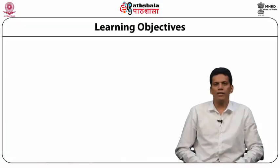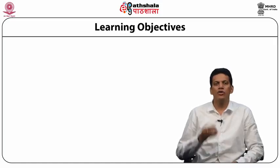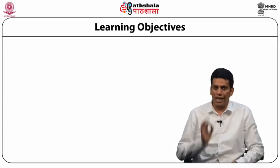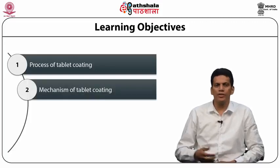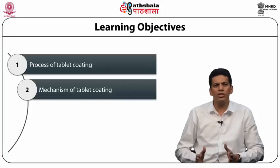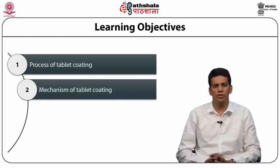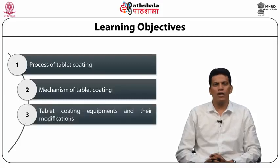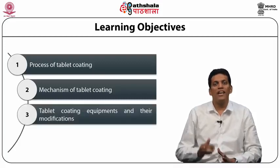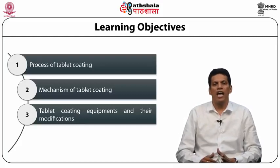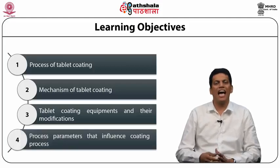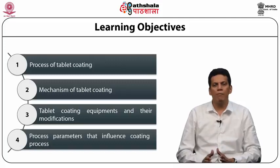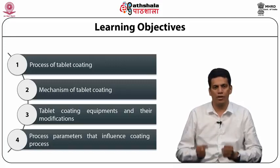This lecture will make you understand about the impact and usefulness of coating. This will tell you about the objectives of why we are performing the coating process. Second, it tells you about components involved in tablet coating and how these components influence coating procedures. Third, about working of tablet coating equipments and how modifications in equipments have improved the coating process. And lastly, how process parameters and variables dictate tablet coating and how these variables can be controlled.